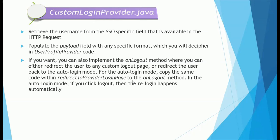In this Login Provider, the logic we need to implement is: we have to retrieve the username from the SSO-specific field that is available in the HTTP request. The SSO will be an additional layer on top of your application. Whenever someone accesses your application it has to go through the SSO layer first, where the user provides the username and password. Then it is required to populate the payload field, which is one of the required fields for authentication. The payload field will have a specific format that you will decipher in the User Profile Provider code — another Java class we'll see soon.